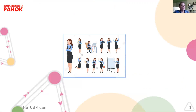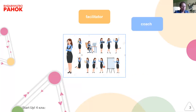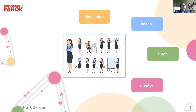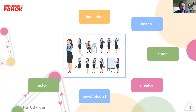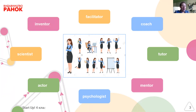You know that modern society expects very much from a teacher. What kind of roles should a teacher play in modern school? A modern teacher is a facilitator, a coach, a tutor, a mentor, a psychologist, an actor, a scientist, and an inventor. I think you know all these words and you agree with me that a modern teacher has so many roles.